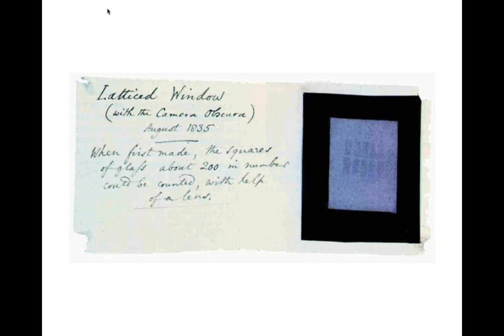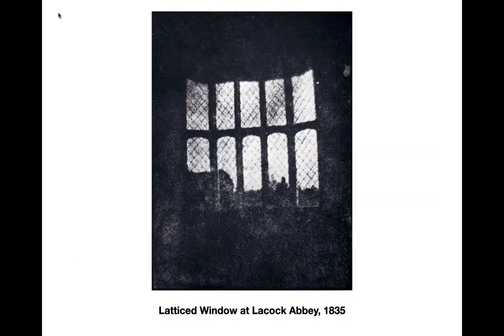Let's take a look at this first image of Talbot's. Here's this negative with his notation that says August 1835 — he shot it with what he was still referring to as a camera obscura, this lattice window at his estate. And here's a positive print made from that negative. You can see there's a little more detail in it, but definitely not as much as a daguerreotype — it has this soft, grainy look, very different from a daguerreotype.